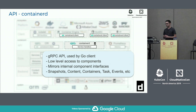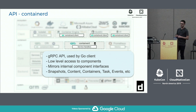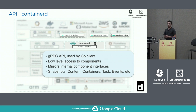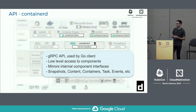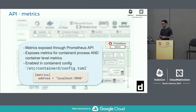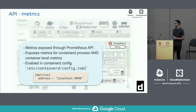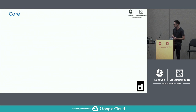Container D's gRPC API is primarily used by Go clients and is quite low-level compared to the Docker API or CRI API — it gives direct access to the components Container D uses internally: snapshots, content store, containers, tasks, and events. The gRPC API mirrors what the underlying services look like. Metrics are exposed through a Prometheus API, covering both the Container D process and container-level metrics — not enabled by default, but configurable via the Container D config.